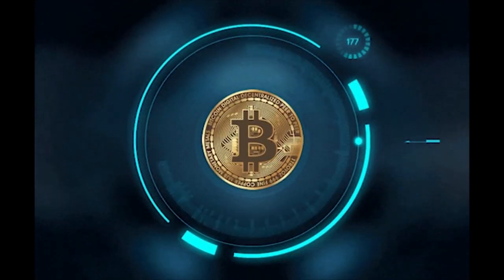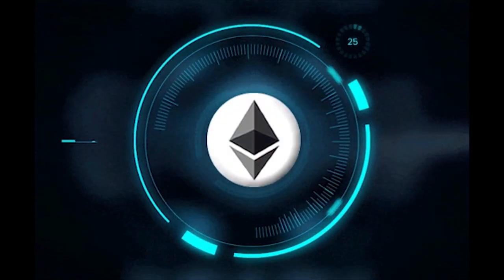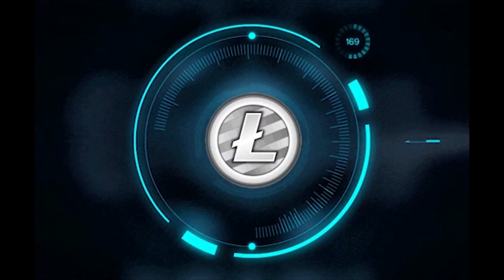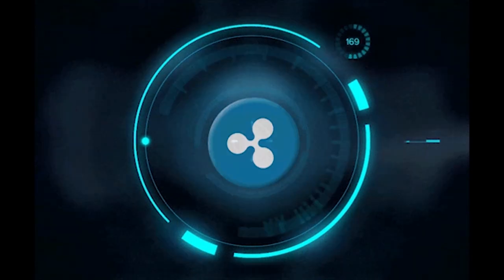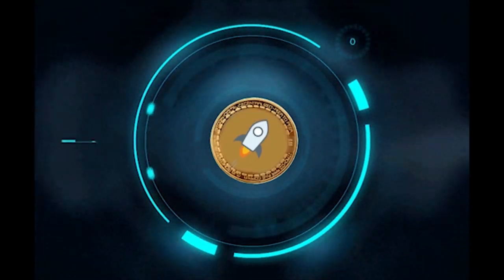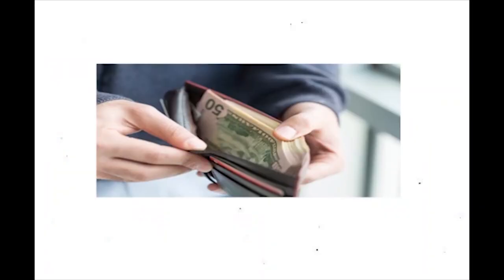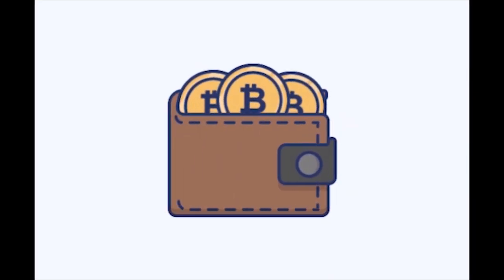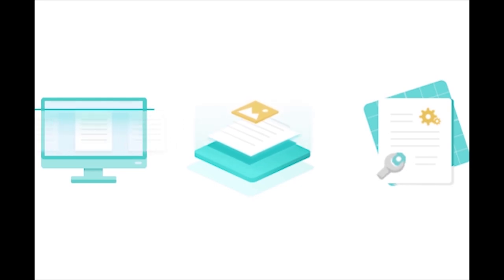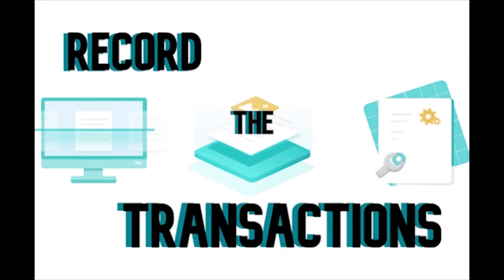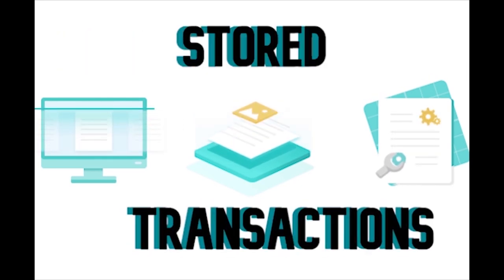To understand what cryptocurrency wallets are, we first have to understand that these types of wallets are like traditional wallets. Unlike traditional wallets which hold your dollars in paper form, cryptocurrency wallets don't store currency. Instead they record the transactions which are stored in the blockchain.